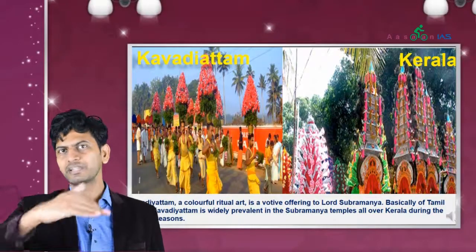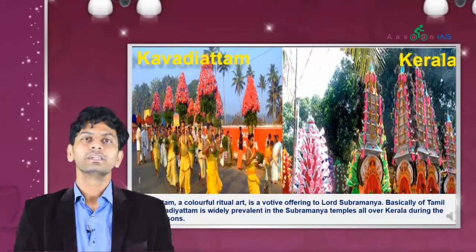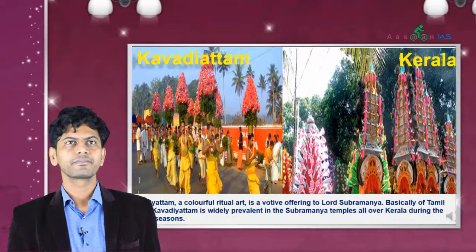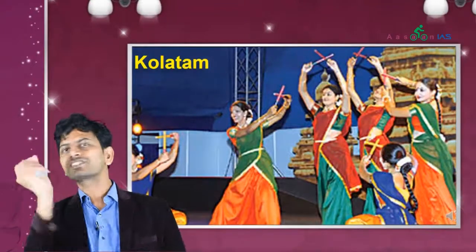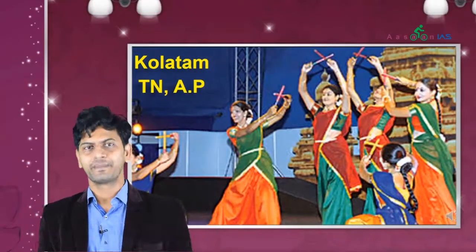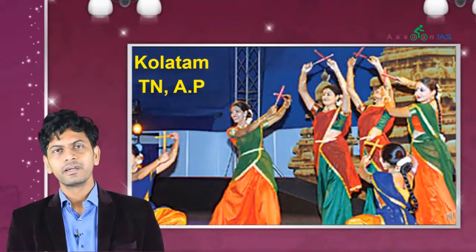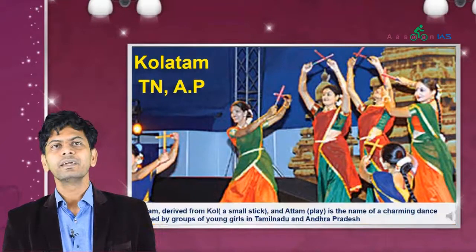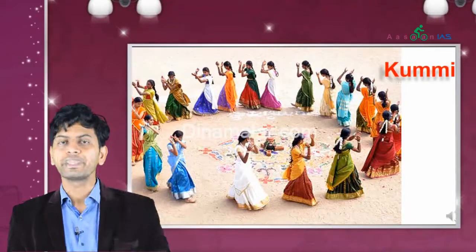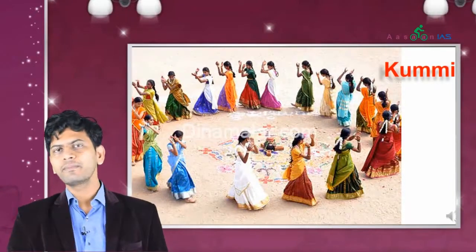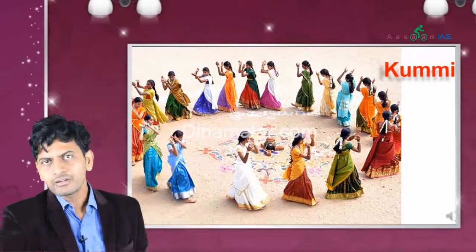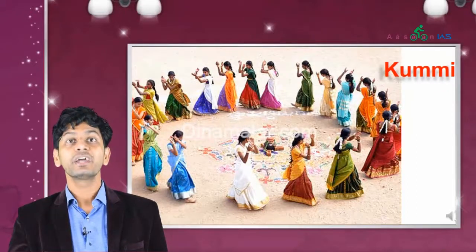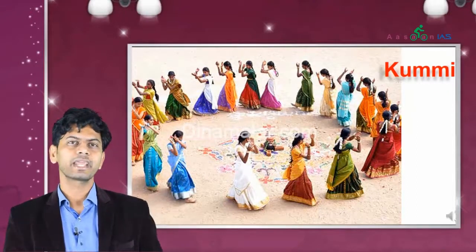Kavadi Attam is a kind of offering to Lord Subramanya in Kerala. Subramanya is Lord Shiva's son, Ganesha's brother. Then Kolatam — 'kol' means stick, 'attam' means play — it is a stick play, just like Dandiya Raas. This is celebrated in Tamil Nadu and Andhra Pradesh. Next, Kummi happens during Makar Sankranti — like Pongal time — where women make rangoli and dance around it. Kummi dance belongs to Tamil Nadu.